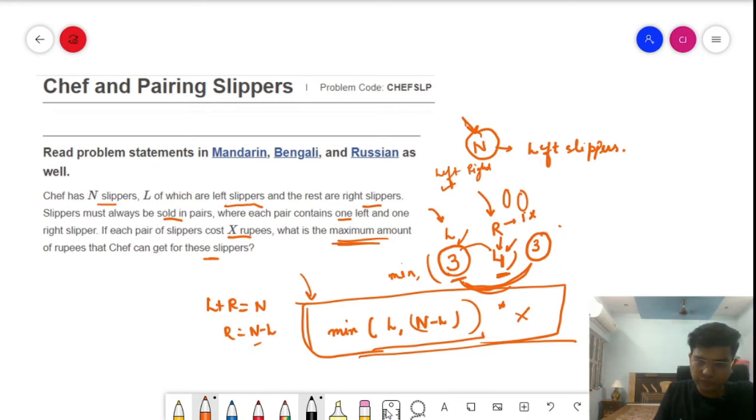If we take one of the test cases, if we have five slippers and out of this two are the left slippers and the cost is given as four, this is the combination which has been given. What will be the answer for this? That is minimum of L, which is 2, and N minus L, that is 5 minus 2 which is 3, into 4. So that will be equal to 2 into 4, that will be equal to 8. So this will be the answer for this.